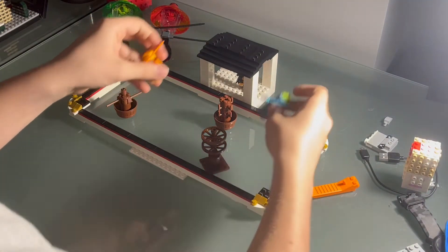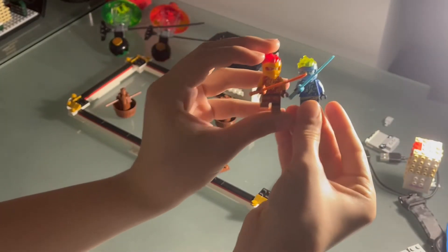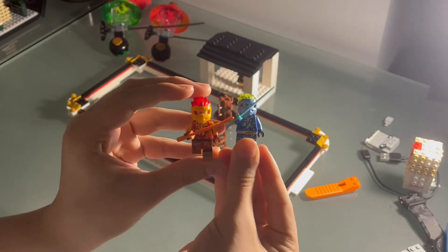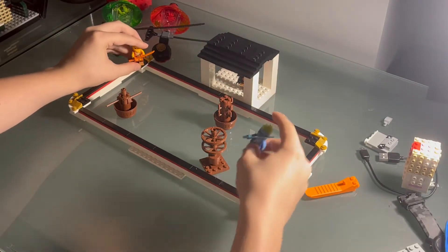So first we have the minifigures. These two guys. This is hard to do. We've got the Spinjitzu Training Kai and Spinjitzu Training Jay.